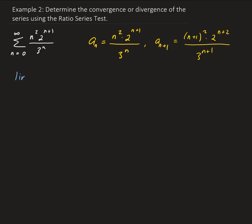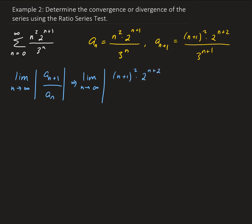Now we're going to take the limit of the (n+1)th term over the nth term. That gives us (n+1) squared times 2 to the (n+2), all divided by 3 to the (n+1), and then I'm going to take the reciprocal of the nth term, which gives us 3 to the n, all over n squared times 2 to the (n+1).